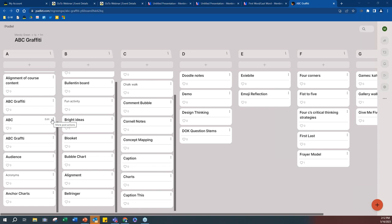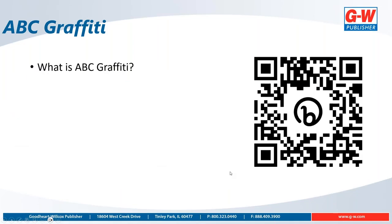Let's talk about the actual strategy ABC Graffiti. This is a group brainstorming strategy — we just brainstormed instructional strategies we've used or heard of starting with letters A through G. What's great about this strategy is it can be used to activate prior knowledge, as we did today, but it can also help make connections to new content or new learning. It can be applied to any topic or content area and used with a wide variety of grade levels from elementary to adults. Don't forget to scan the QR code for the K20 Learn website with over 200 strategies.